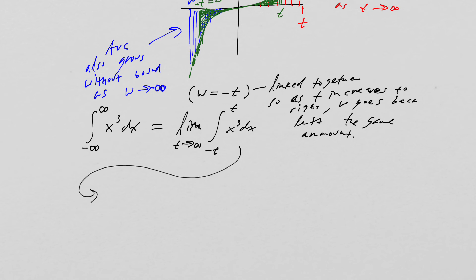Well, let's actually compute this up. We take the limit, t going to infinity, and now we take x to the fourth power over four. We evaluate at negative t to t.